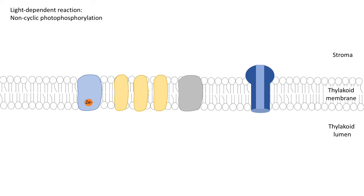Question three: I wanted you to draw and annotate a diagram of non-cyclic photophosphorylation. What I'll do is take you through the animation, and within the animation there will be descriptions of each process.